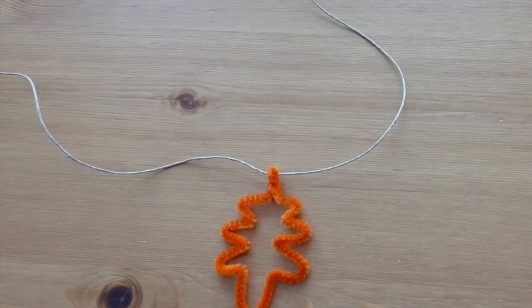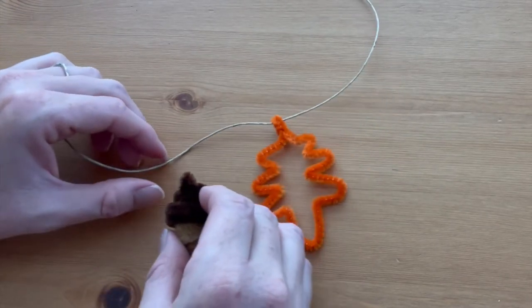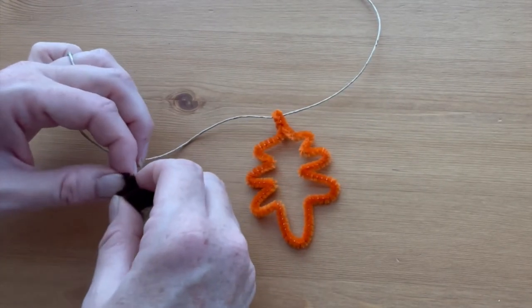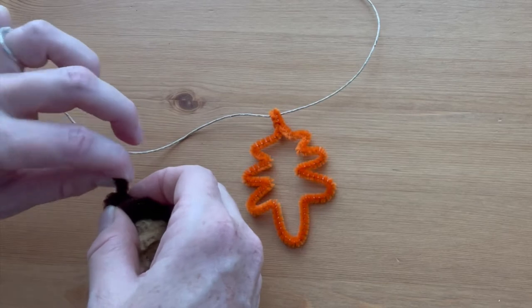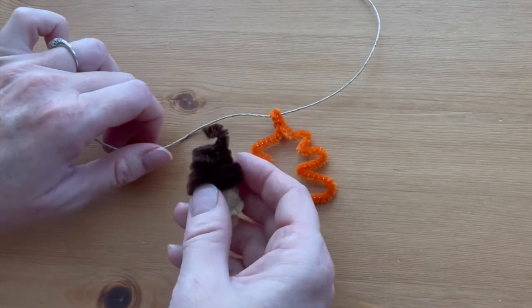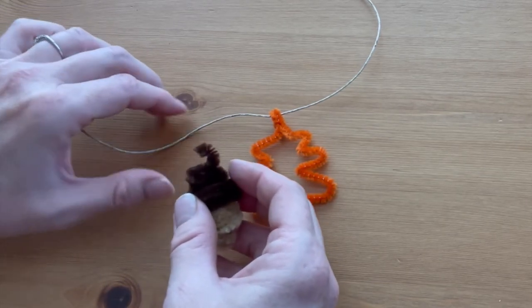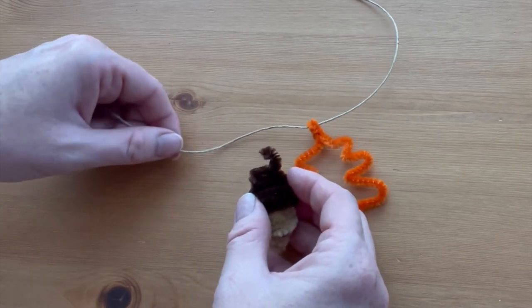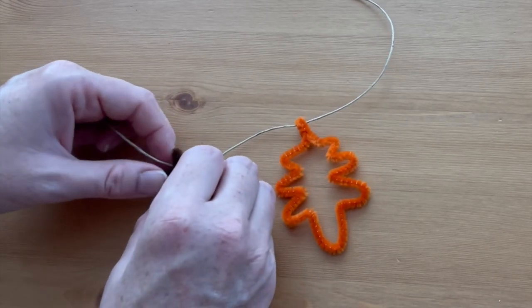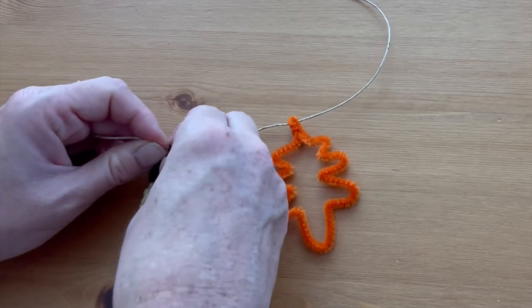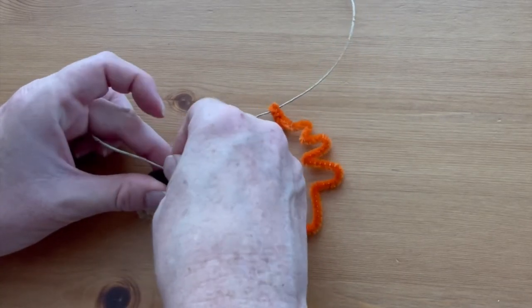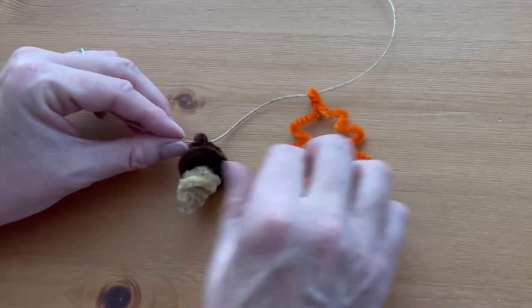You can space these however you want—I like to go about three inches or so in between. For the acorn, I'm going to open up that little top that I left, and I'm going to go about three inches in and pinch that tightly to close the acorn on the twine.